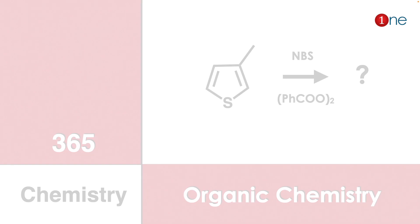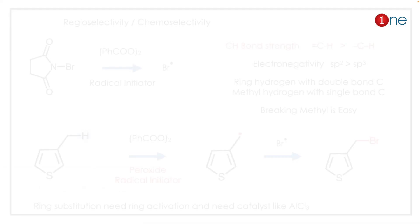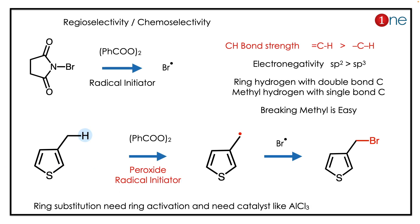Here you are using NBS in peroxide conditions — it's a free radical initiator, so the bromine free radical forms. Now, where will it attack? There are many possibilities in the ring, so regioselectivity matters. You can say it's regioselectivity or chemoselectivity, because there are many hydrogens that can be replaced by bromine. The sp2 bond energy is high.